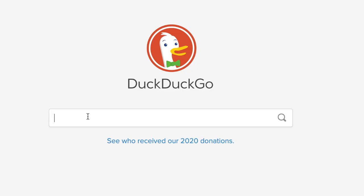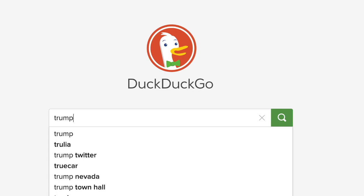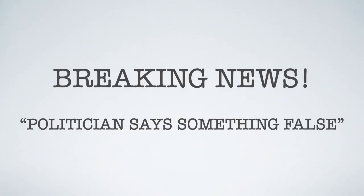Do a quick search on the internet. You'll find that journalists are sloppy about this. Nearly every article I found about a politician lying emphasizes that the statement was false. But we can't say it was a lie unless we know the politician did not believe it when they said it. Politicians say a lot of ridiculous things, but as long as they believe what they say, they're not lying.